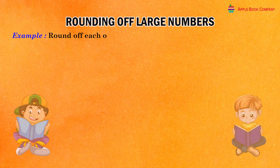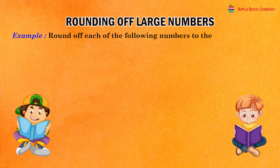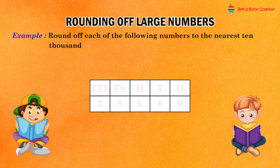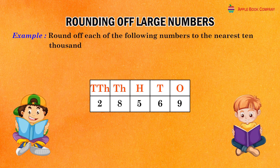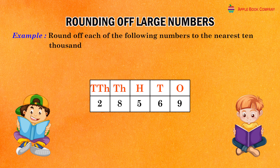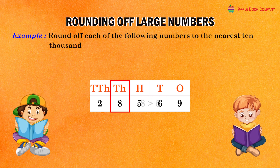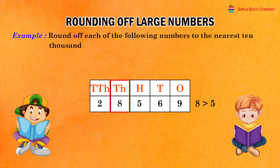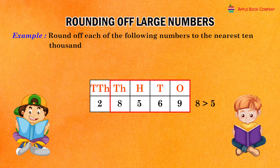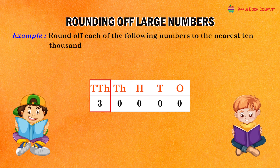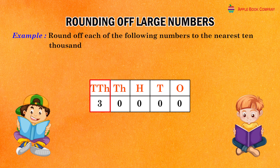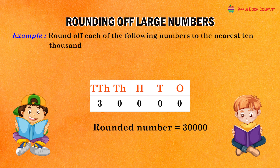Example: Round off each of the following numbers to the nearest 10,000. In the number 28,569, the digit at the thousands place is eight which is greater than five. Therefore, replace the thousands, hundreds, tens and ones digits by zeros and add one to the ten thousands digit. Rounded number: 30,000.